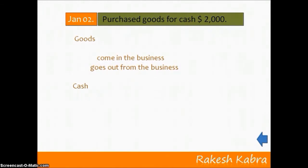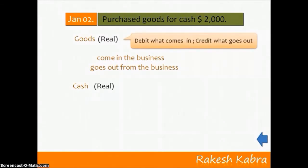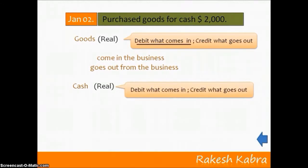Now we decide the category of these two accounts. Goods is a real account and Cash is also a real account. The rule for real account is debit what comes in, credit what goes out. Goods are coming into the business, so we debit the Goods account. Cash is going out, so we credit the Cash account. The final conclusion: debit Goods account, credit Cash account.